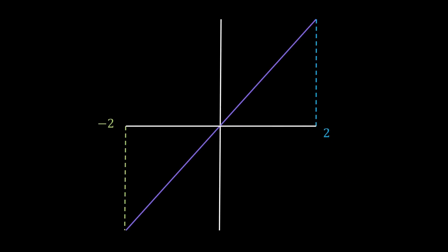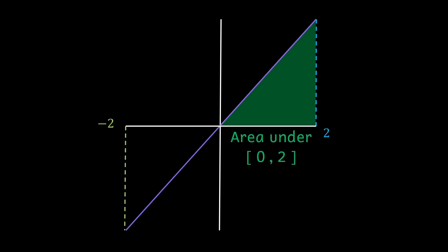For an easy visual, take the line y equals x. If we start at zero and go in the positive direction, the area under the graph will be this triangle.